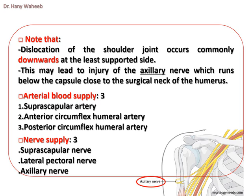Nerve supply of the shoulder joint: the suprascapular nerve, the lateral pectoral nerve, and the axillary nerve.